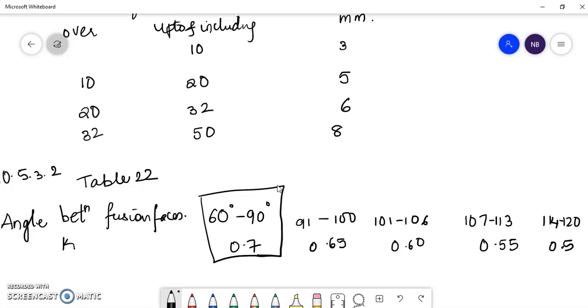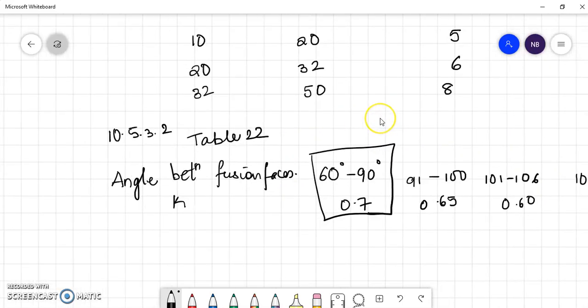Also in clause 10.5.3.3, this clause talks about what should be the thickness of the plate to be considered in case of complete penetration and in case of incomplete penetration. So this clause says that the thickness of the thinner part should be considered when it is a complete penetration.